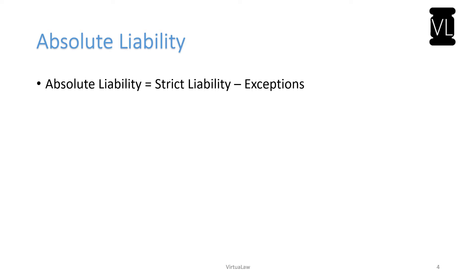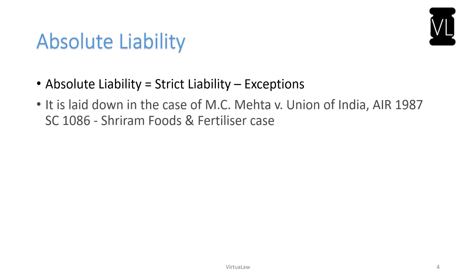Under absolute liability, any person in whose boundary a hazardous substance is kept shall be absolutely liable without the application of any exceptions — even if it is with the consent of the plaintiff, an act of the sovereign, an act of a third party, or even the fault of the plaintiff. In all these cases, if damage has occurred, the person in whose boundary the hazardous substance is situated will be made absolutely liable.